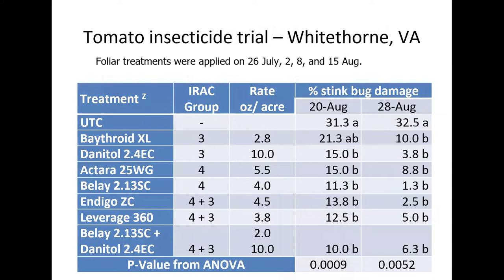Here's an efficacy table from a tomato trial conducted in southwestern Virginia where we would spray four times — starting as soon as the first fruit was about a quarter inch in diameter, then continuing weekly. The story is consistent: you'll get significant reduction in stink bug damage with any of the pyrethroids or neonicotinoids, and products that combine both, like Leverage. Are you going to eliminate all damage? Probably not — bugs can get in, feed, and do some damage — but you can significantly reduce it.